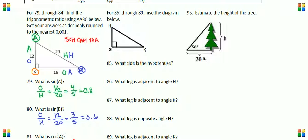Questions 85 through 89 say use the diagram below, and the diagram is just a right triangle. All we have are the labels of the vertices: H, G, and K. Let's take a look at the question.